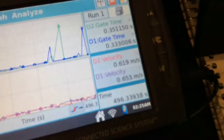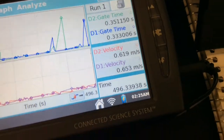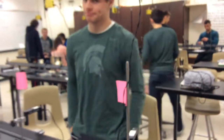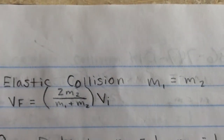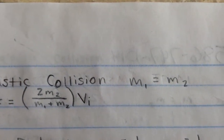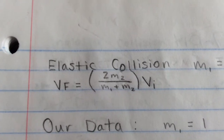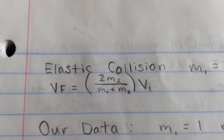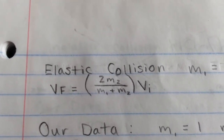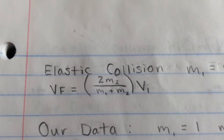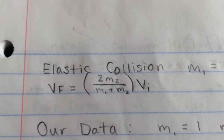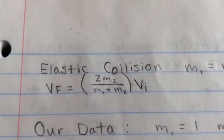And those are our numbers. Here's our work. In an elastic collision where the mass of the first object is equal to the mass of the second object, the velocity final should equal 2 times the mass of the second object over the mass of the first object plus the mass of the second object, all multiplied by the velocity initial.